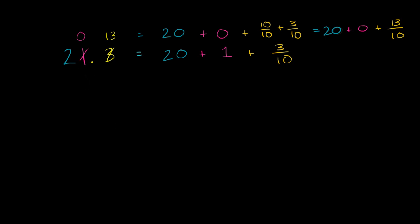Let's do another example with this exact same number. So once again, 21.3. And I'll write it out again. This is equal to 20 plus 1 plus 3 tenths, plus 3 over 10.